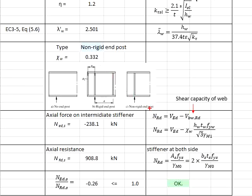Next, you need to determine the axial loads acting on the stiffener. It is calculated by subtracting the shear resistance of the web from the shear loads.